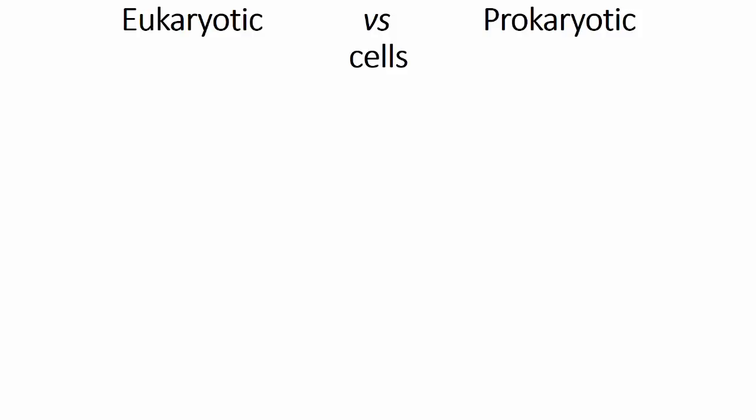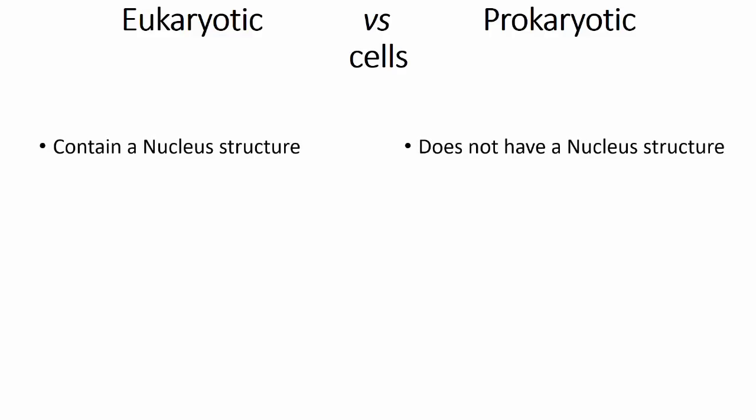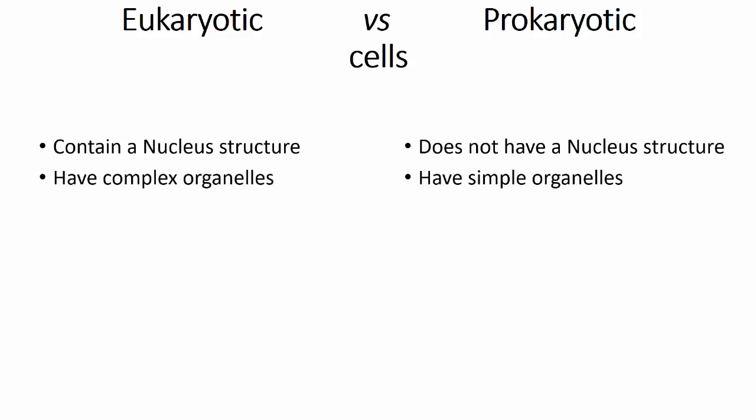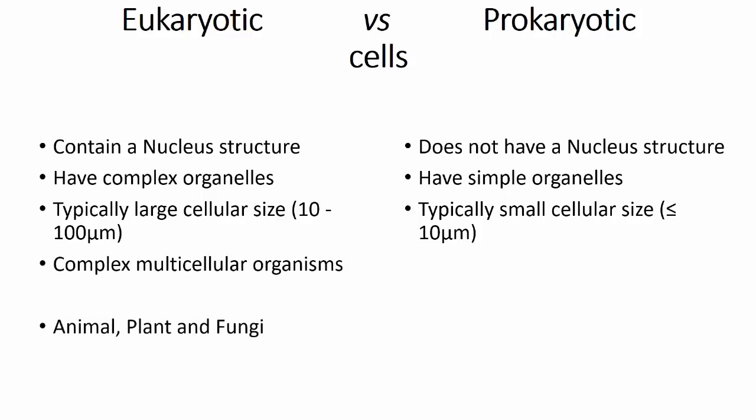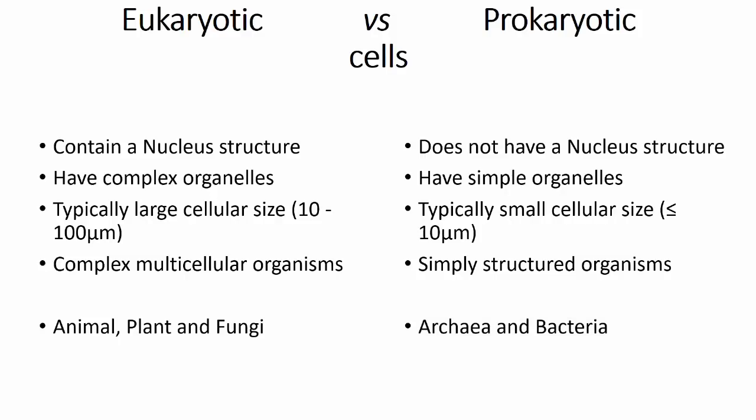Cells can be split into two groups: eukaryotic and prokaryotic cells. The defining difference between these cell types is that eukaryotes have a defined nucleus structure, whereas prokaryotic cells do not. Eukaryotes also have a range of complex membrane-bound compartments within the cell, whereas prokaryotes have simplistic compartments in comparison. These compartments are called organelles. Eukaryotic cells are often much larger than prokaryotic cells, and as such are usually found in complex multicellular organisms such as animals, plants and fungi. Prokaryotes have a simple structure by comparison and comprise archaeal and bacterial organisms.